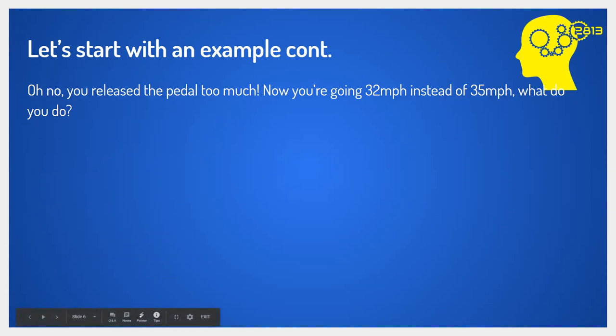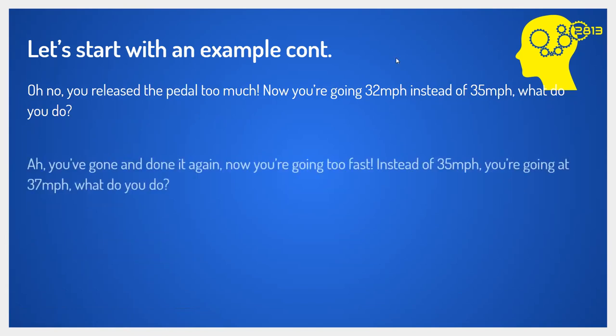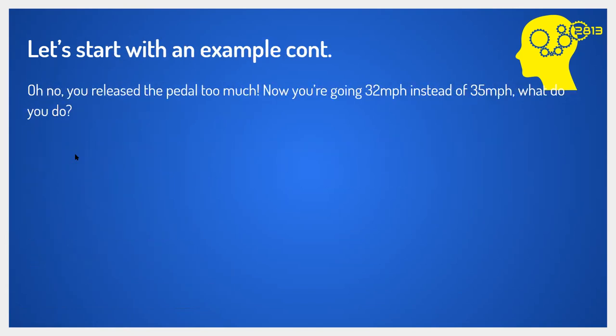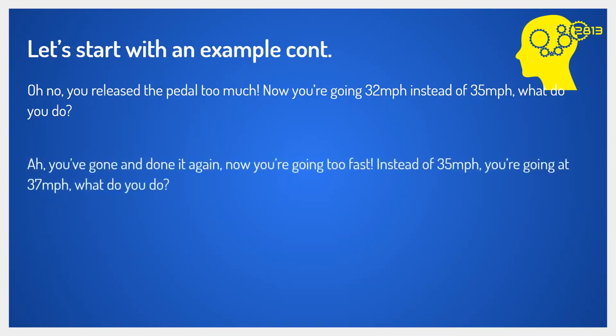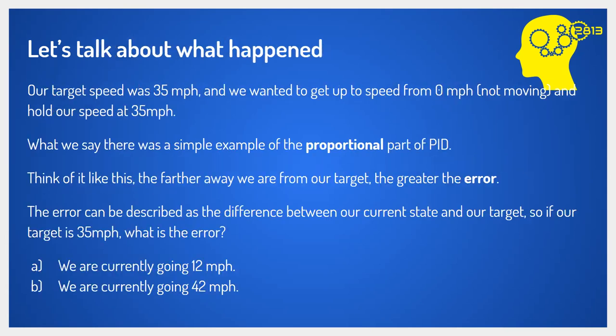But now you release the pedal too much by accident and you're going 32 miles an hour instead of 35. So what do you do? You slowly push on the gas to try to get up to 35 miles an hour. And then you've done it again — now you're going 37 miles an hour instead of 35. So what do you do? You slowly release the pedal. This cycle of going under and over the target repeats over and over again.